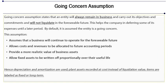Going Concern Assumption states that an entity will remain in business and carry out its objectives and commitments, and will not liquidate in the foreseeable future. This helps the company in deferring some of its expenses until a later period. In the absence of contrary information, it is assumed the entity is a going concern, and that a business will continue to operate for the foreseeable future.